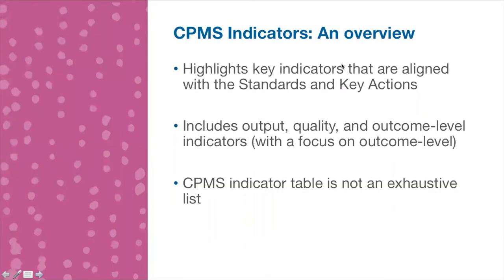To provide a brief overview of the Child Protection Minimum Standards indicators, which you will likely already be familiar with: the Minimum Standards indicators highlight key indicators that are aligned with the standards and the key actions within each specific standard. The indicators themselves include output indicators, quality indicators, and outcome level indicators, with a focus on the outcome level.